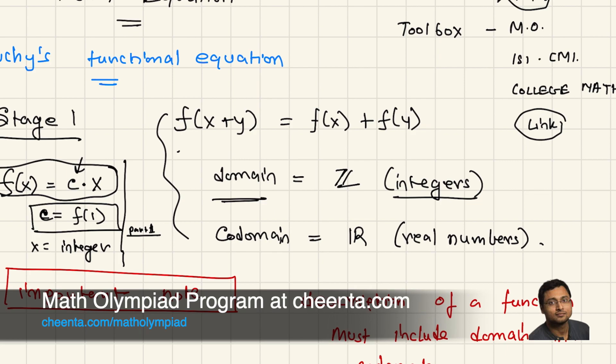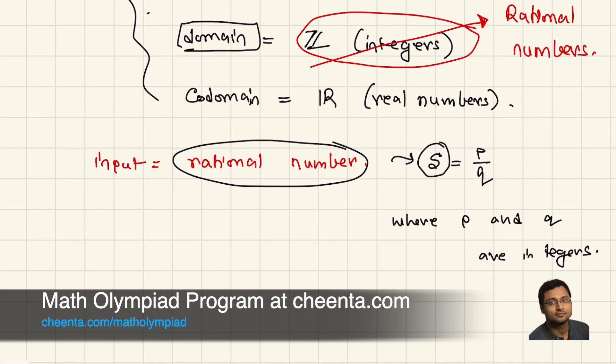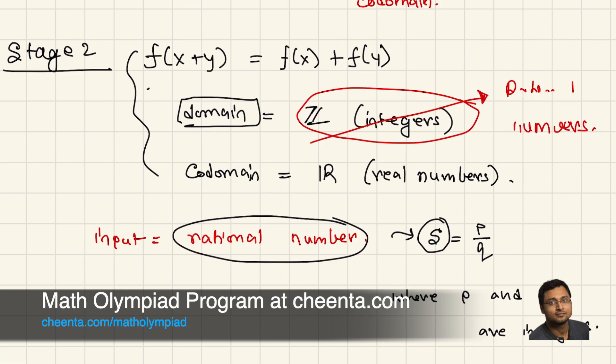So the same function, the same structure of the function will work. f(x + y) is equals to f(x) + f(y). And if the domain is rational numbers, of course, you know the rational numbers include the integers, but it has more types of numbers. f(x) is equals to some constant times x, where x is rational.